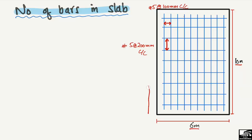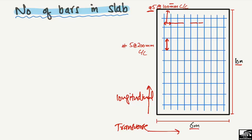This is the longitudinal direction of the slab and this is the transverse direction. In the longitudinal direction, number 5 bars are used at 200 millimeters center to center. In the transverse direction, number 5 bars are used at 100 millimeters center to center, so the distance between these transverse bars is 100 millimeters center to center.